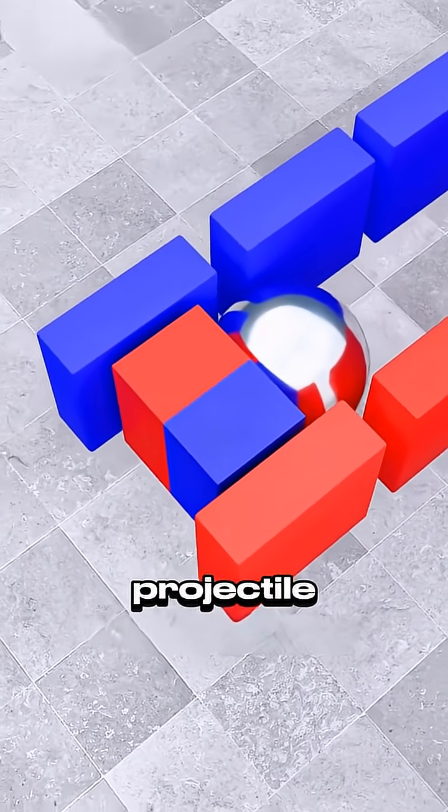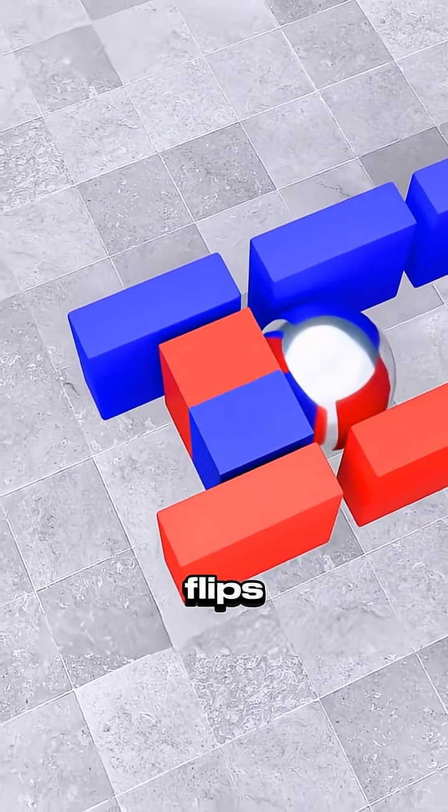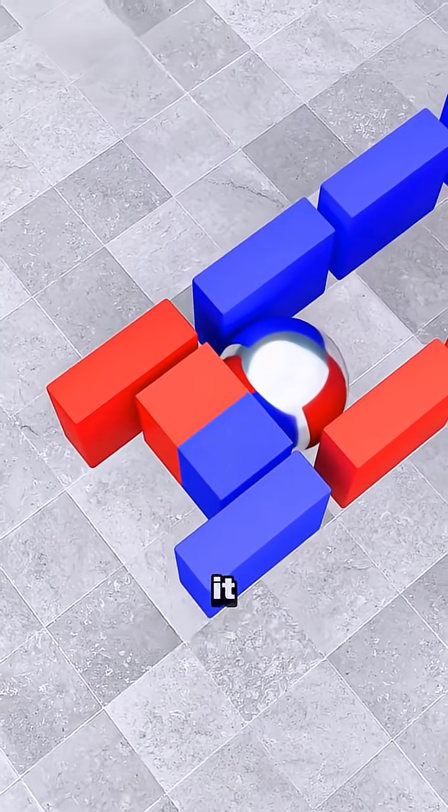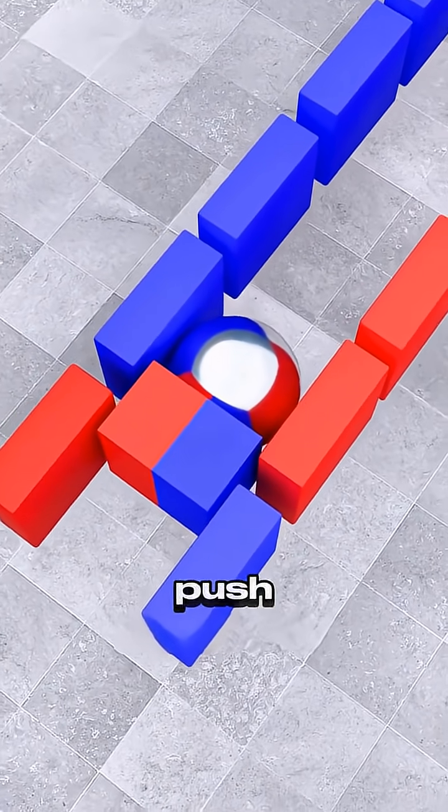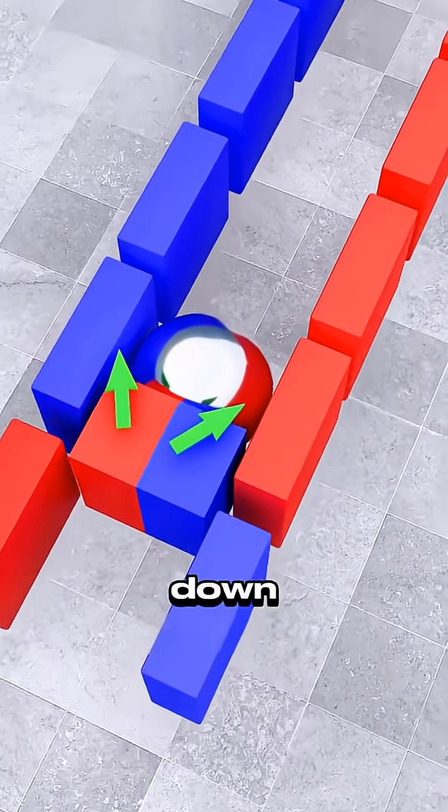The instant the projectile passes, the coil's polarity flips, repelling it forward while the next coil attracts it. This sequential magnetic push-pull accelerates the projectile down the line.